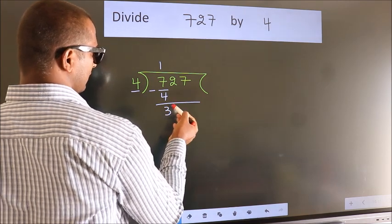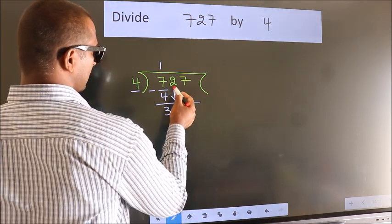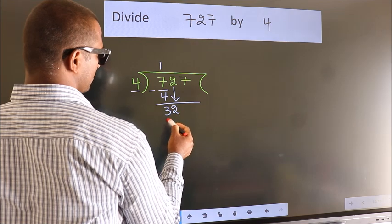After this, bring down the next number. So 2 comes down, giving us 32.